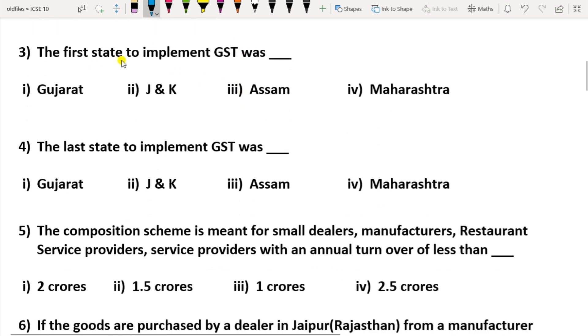The first state to implement GST was Assam. The last state to implement GST was Jammu and Kashmir.